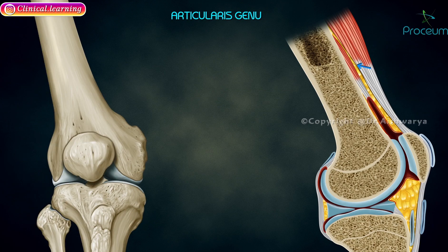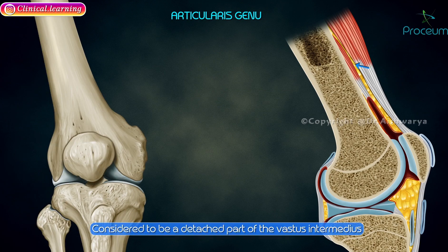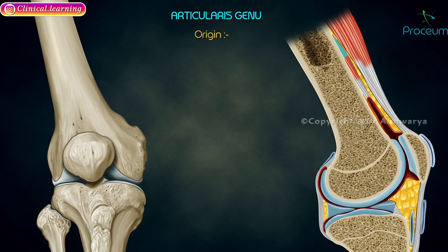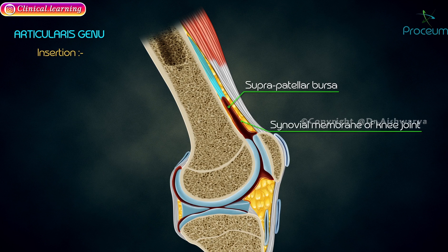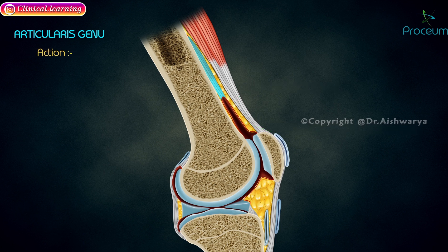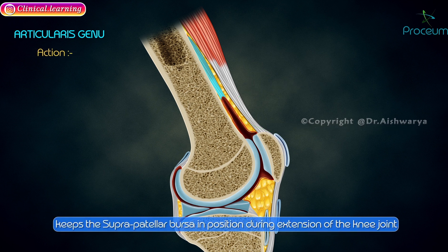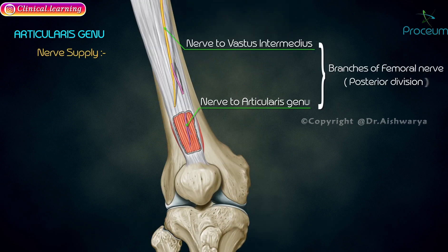Articularis genu. It is considered to be a detached part of the vastus intermedius. It originates at the anterior surface of the lower part of the shaft of the femur. Insertion is at the suprapatellar bursa and upper part of the synovial membrane of the knee joint. Its action is to keep the suprapatellar bursa in position during extension of the knee joint. Nerve supply is by the femoral nerve.